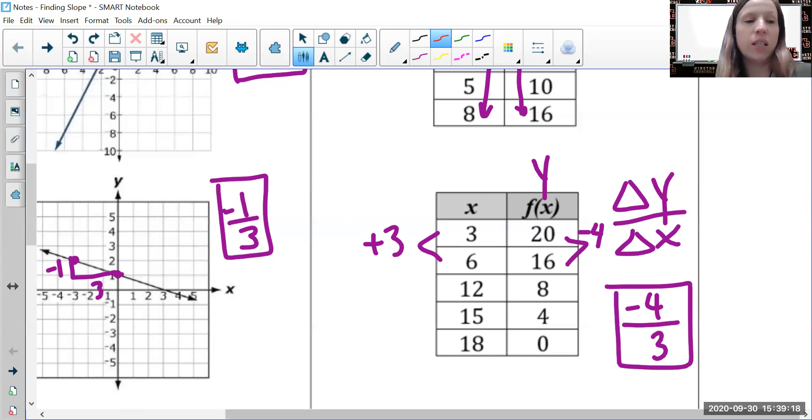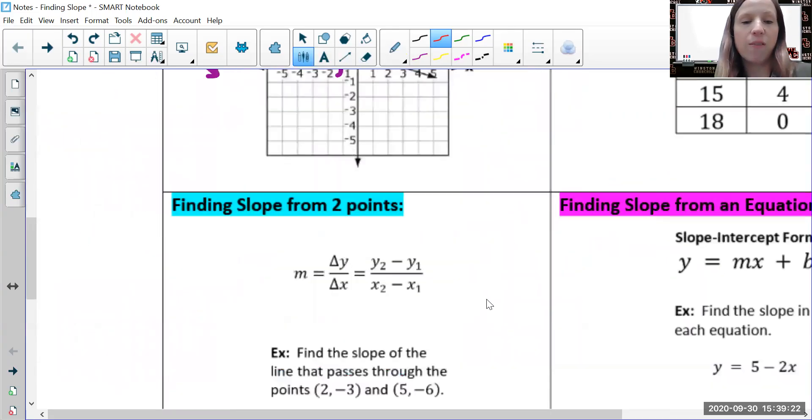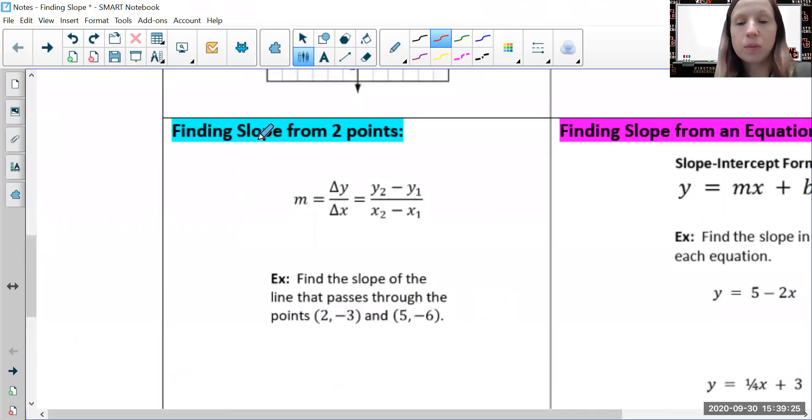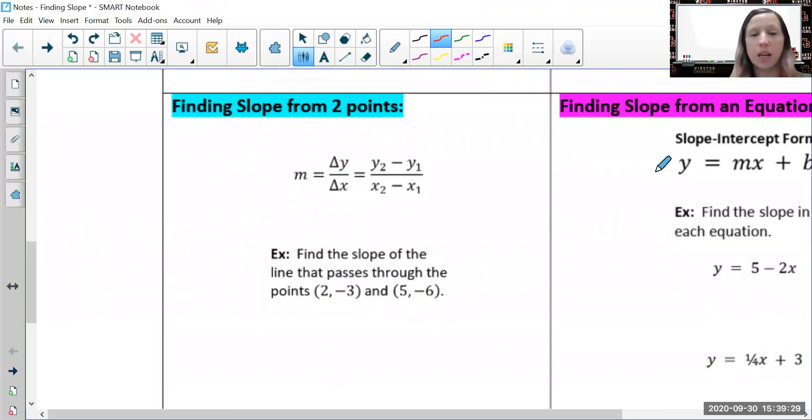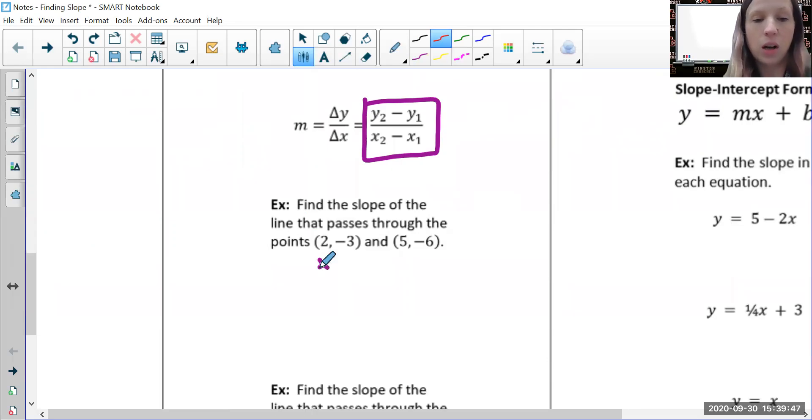Last, we're going to look at finding slope from two points. There's a slope formula on your formula chart: y2 minus y1 over x2 minus x1. Let's label our points: x1, y1 is (2, -3) and x2, y2 is (5, -6). Plugging into our formula: y2 which is negative six, then a minus sign.